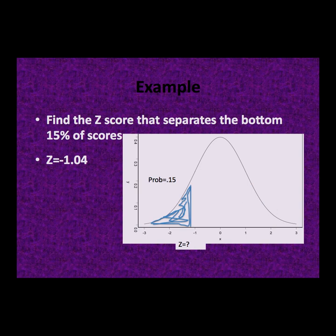Find the z-score that separates the bottom 15% of the scores. In this case, we are given a proportion of data, not a z-score, and we are asked to find the z-score. We mark the lowest 15% of data above the curve. That is the smaller proportion, so we look down the proportion in the tail column for 0.15. The closest value gives us a z-score of negative 1.04. Note it is imperative to use the negative number because we are below the mean. Z-scores can be negative; probabilities can never be negative.